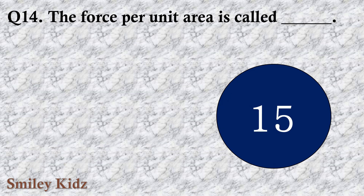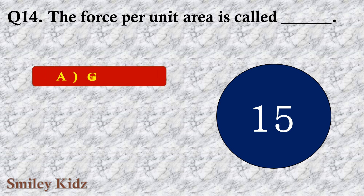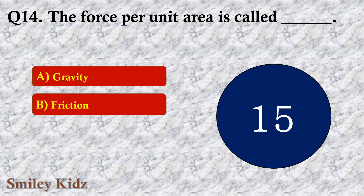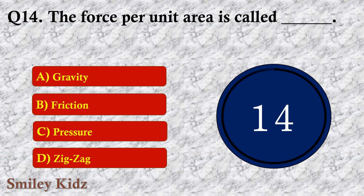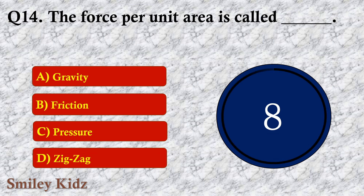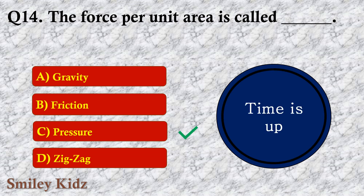Question number fourteen: The force per unit area is called dash. The options are A. Gravity, B. Friction, C. Pressure, or D. Zigzag. The right answer is option C — Pressure. The force per unit area is called pressure.